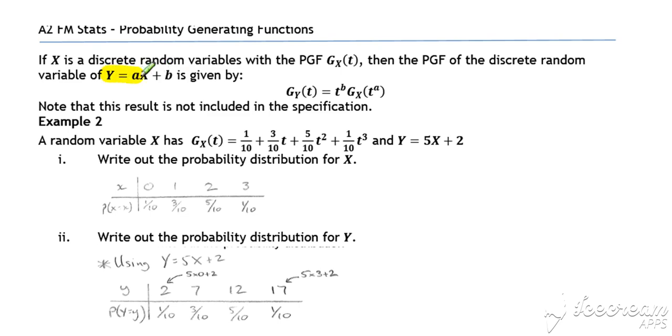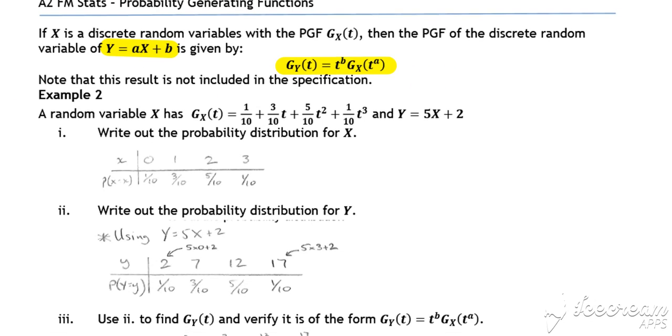If instead we've got some kind of linear transformation of a discrete random variable, then this result can be useful for speeding up our method for getting to the new probability generating function. So let's have a look at example two.